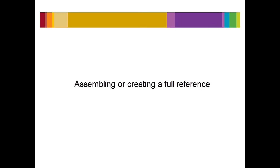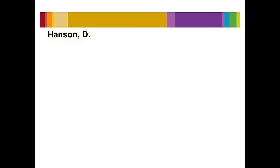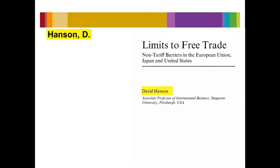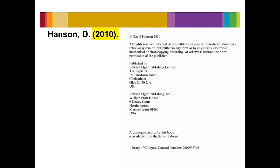Assembling the Identifying Information. The author's name is listed first: the author's surname or family name, comma, then the initial of their first name or given name, full stop. The year is then listed in brackets, with a full stop.